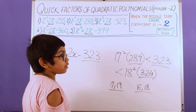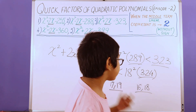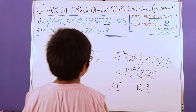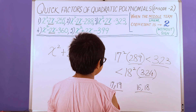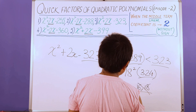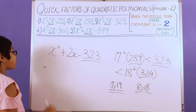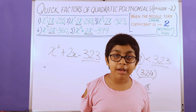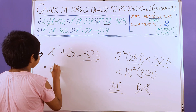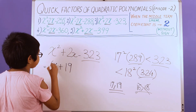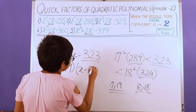Again, the product of two odd numbers gives an odd number, and the product of two even numbers gives an even number. We have an odd number, so the even pair goes out and the odd pair is in. We have a positive sign from 2x, which tells us the bigger number should have the positive sign and the smaller should have the negative sign. So the factorization is (x + 19)(x − 17).